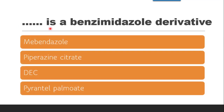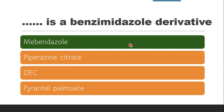Next question: Dash is a benzimidazole derivative — whether it is mebendazole, piperazine citrate, DEC, or pyrantel pamoate. The correct answer is mebendazole. Other examples of benzimidazole derivatives include mebendazole and albendazole, meaning they contain a benzimidazole in them — an imidazole heterocycle attached with benzene.